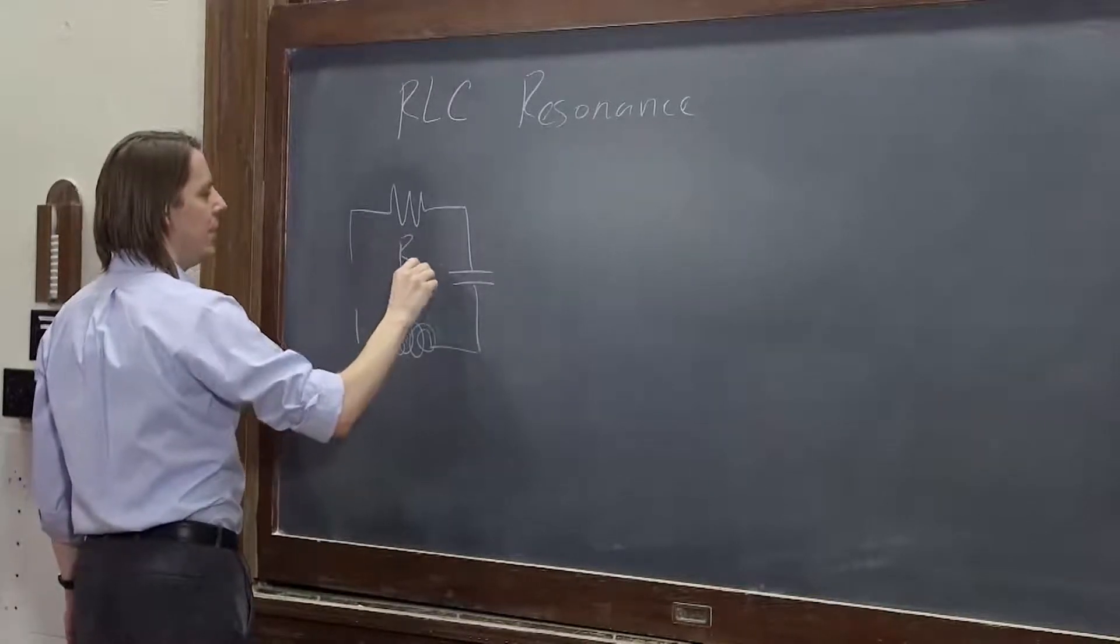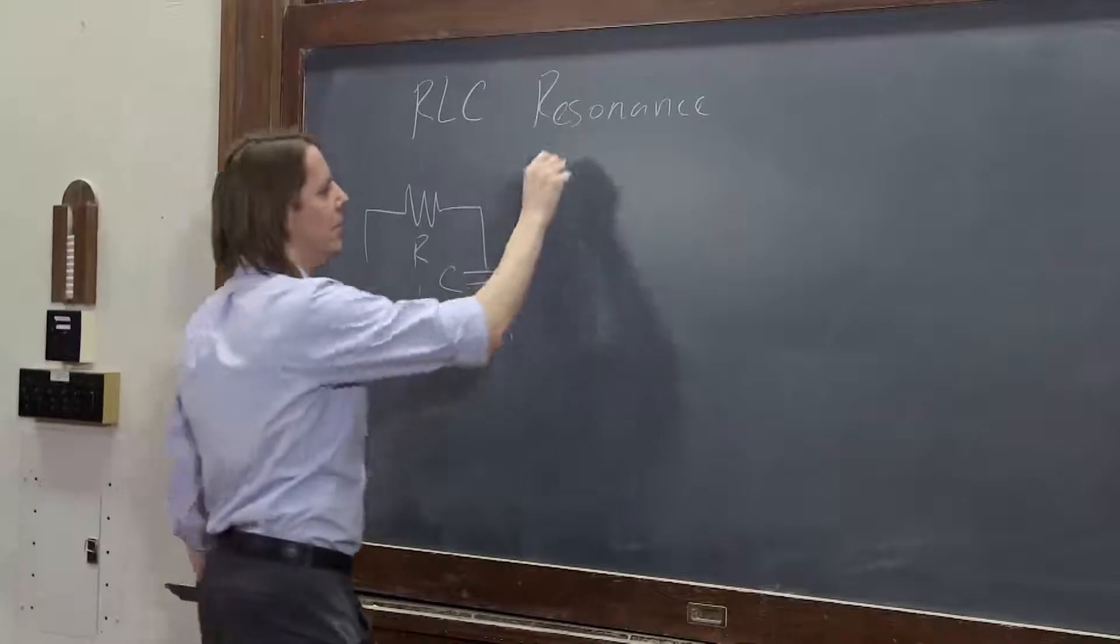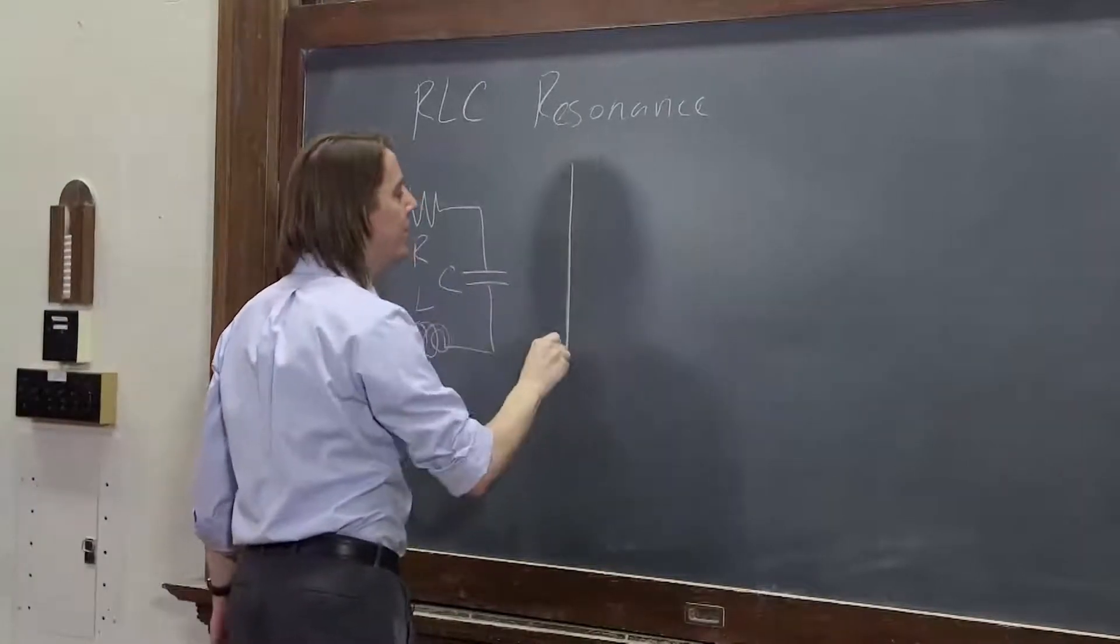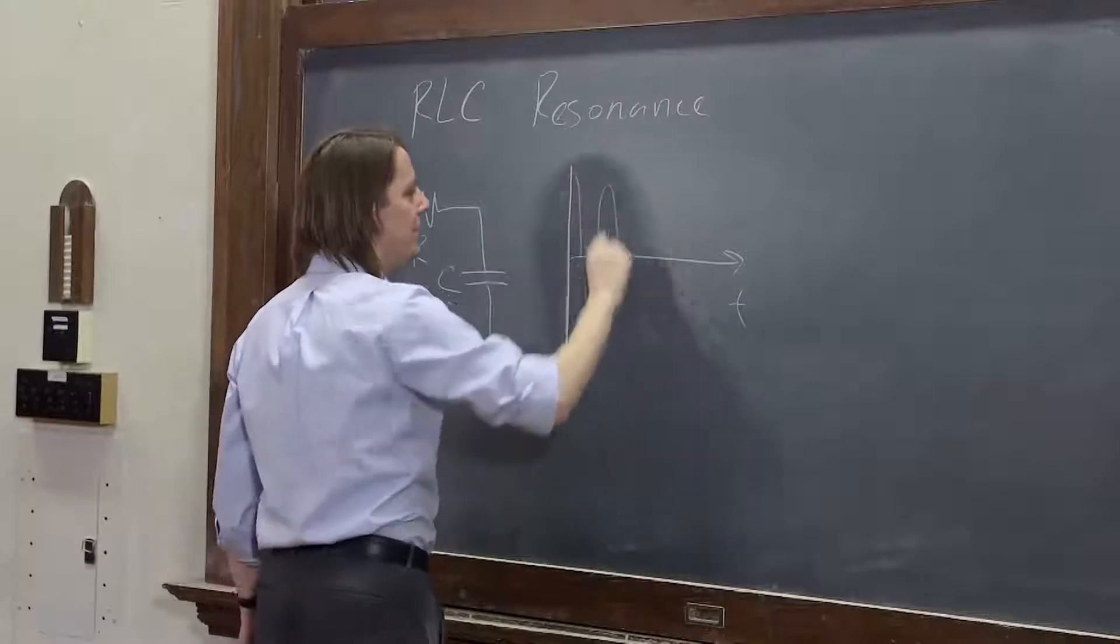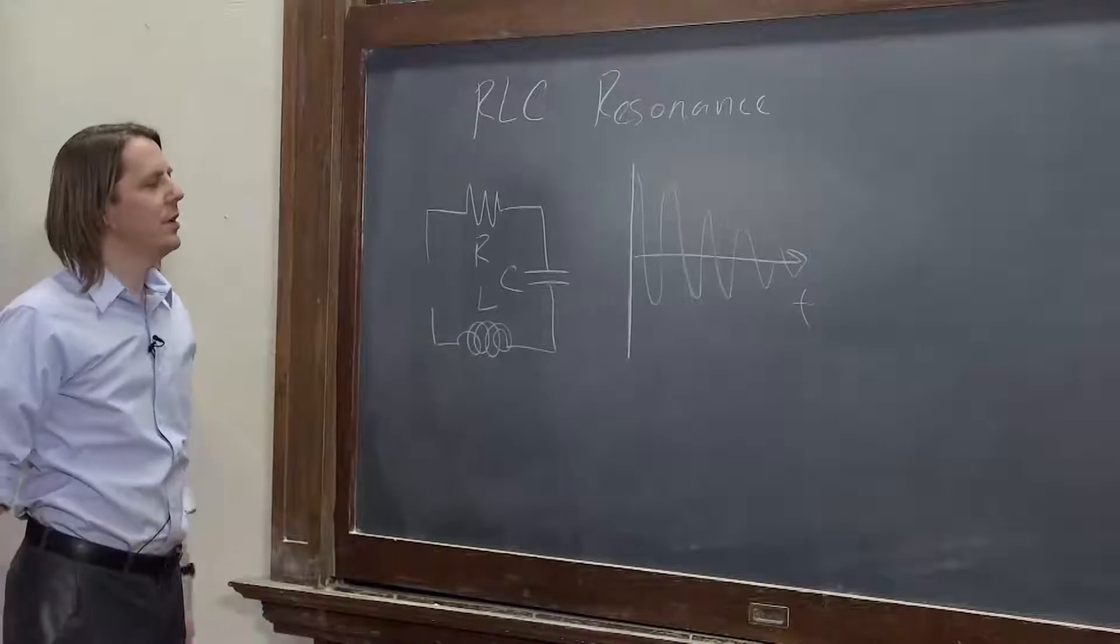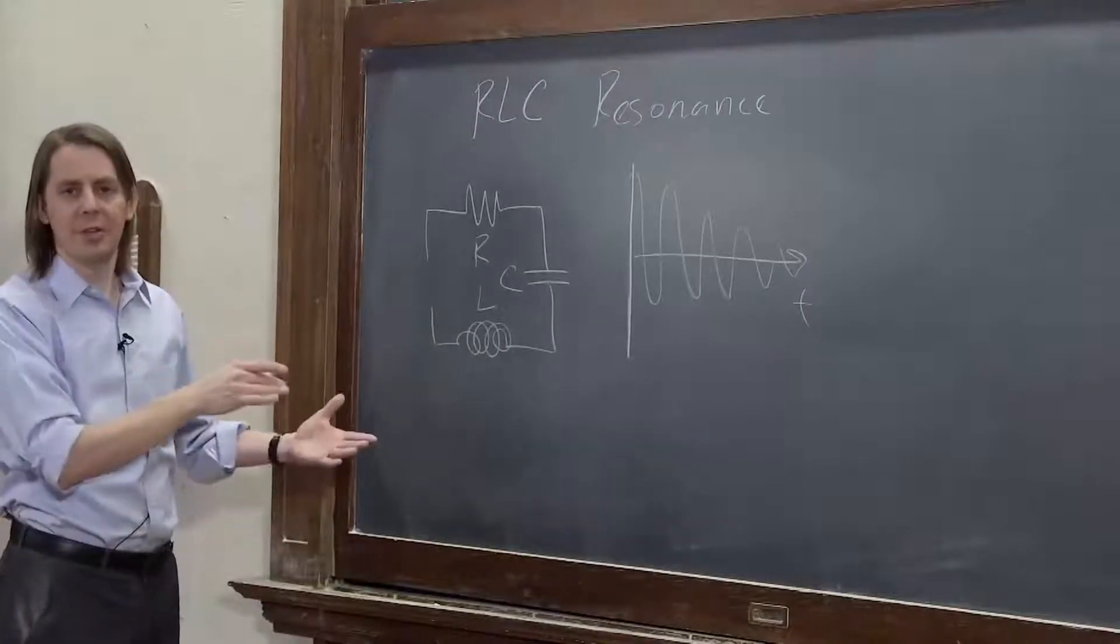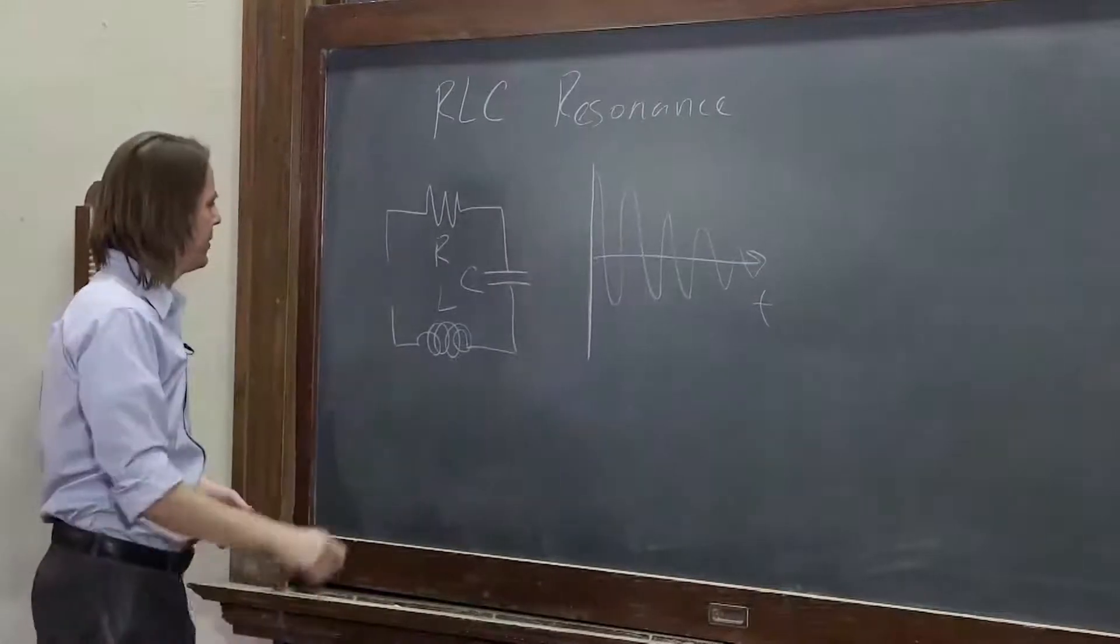Recall that we looked at it before when we weren't driving it, and we plotted and solved the differential equations for what would happen in time. We looked at the current. Remember it would oscillate and decay. It had this natural frequency which it wanted to oscillate, but then the resistor would cause the decay. It wouldn't oscillate forever.